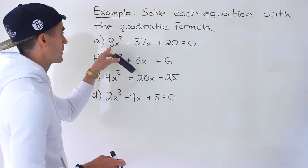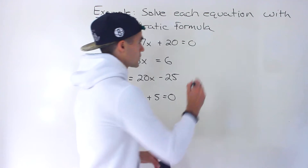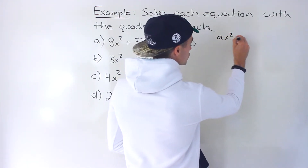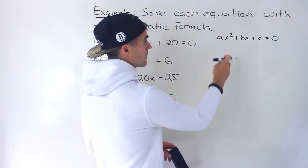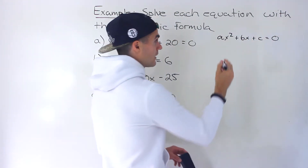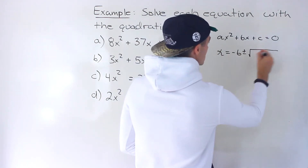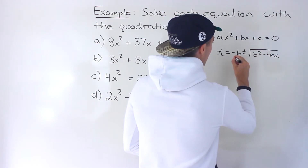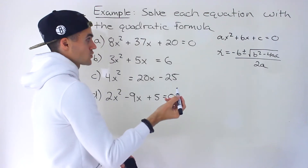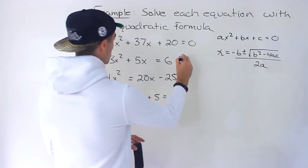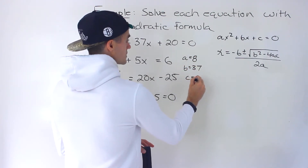So let's start off with part A. We got 8x squared plus 37x plus 20 is equal to 0. Just as a quick review, whenever you have a quadratic equation in standard form equaling 0, the solution is always going to be x equals negative b plus or minus the square root of b squared minus 4ac, all over 2a. That's the quadratic formula. So applying this here, the a value is 8, the b value is 37, the c value is 20.